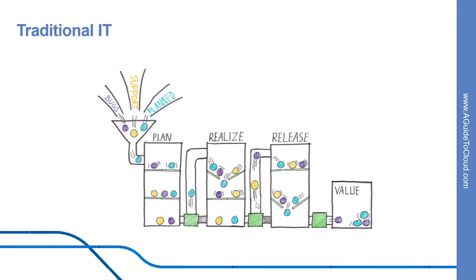If you look at this picture of the traditional silo-based value stream, we see bugs and unplanned work, necessary updates or support work, and planned value-adding work — all added to the backlog of the teams. When everything is planned and the first gate can be opened, everything drops to the next phase. All the work and value move in piles to the next phase, from planned to realized — where all the work is developed, tested and documented — and from there it moves to the release phase. All the value is released at the same time, and as a result, the release takes a long time.